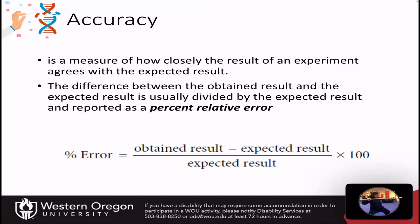Accuracy is defined as a measure of how closely the result of an experiment agrees with the expected result. This is similar to percent yield, but here we use percent error. The percent relative error is the obtained result minus the expected result, times 100. Usually this should be a negative value because you'll probably get less than your expected result. However, if you have an interferent in your sample matrix adding to the signal, you might overestimate and get more than the expected result. If the interferent blocks the signal, you'll get less — and this gives you your percent error.